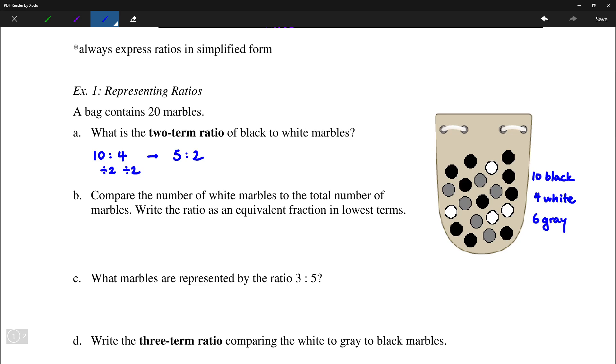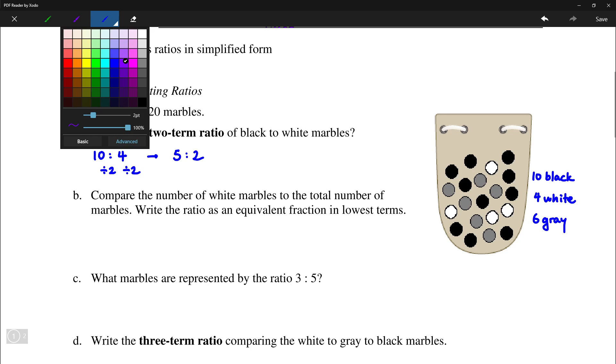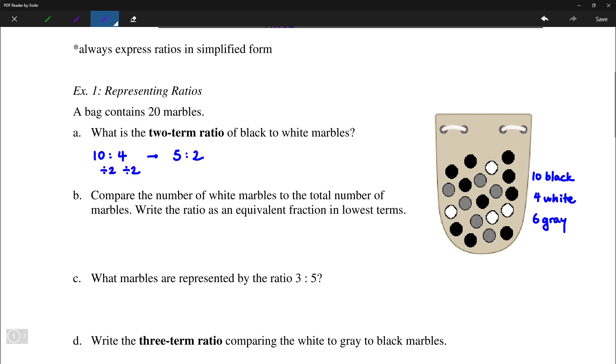So next up we have the number of white marbles, which is 4, to the total number, which is 20 marbles. And again that is also reducible, we can divide both of these numbers by 4. So we'll get 1 to 5.